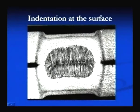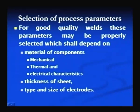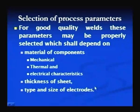The process parameter selection — welding current, welding time, and pressure — is important for producing a successful joint. The selection of these parameters depends greatly on the material of the component in terms of mechanical, thermal, and electrical characteristics of the plates to be joined, the thickness of the sheet to be welded, and the type and size of the electrodes being used.